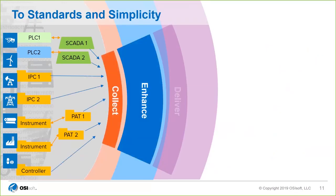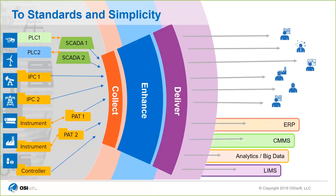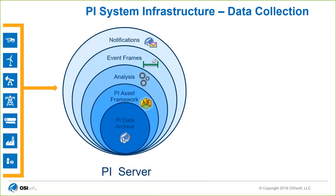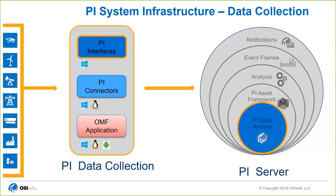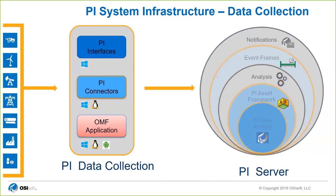The PI System provides a way for you to standardize and simplify that data collection. If everything is being fed into a central enterprise-level system like PI, then everyone has access to the same system, and how they utilize it is left to the viewer or engineer. The way we collect it is through interfaces and connectors, and we have the OMF protocol which allows you to write applications to correctly send data to the PI System — and it's platform agnostic.